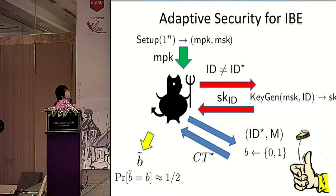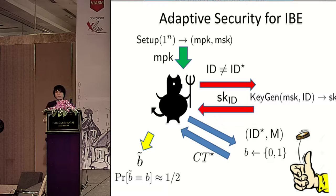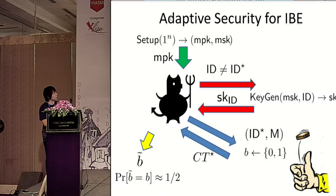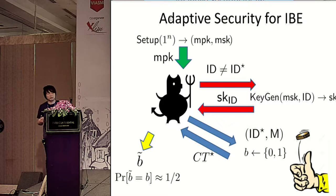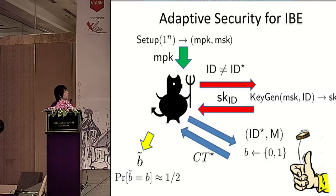In the adaptive security game, the adversary can query for any secret keys they want. At some point, they adaptively choose some challenge identity ID*, receive the challenge ciphertext, under the condition that ID* does not equal any of the IDs previously queried. They can then continue making secret key queries. This is the adaptive security game.